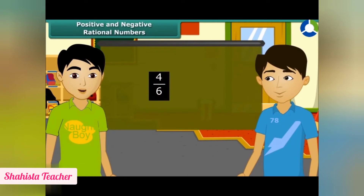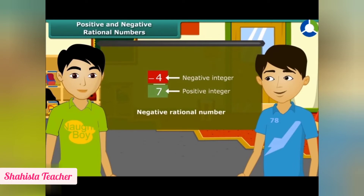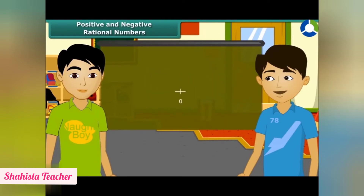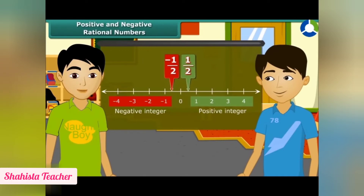A rational number with a positive numerator and positive denominator is called a positive rational number. When the numerator is a negative integer and the denominator is a positive integer — for example -4/7 — it is a negative rational number. On a number line, 1/2 will lie between 0 and 1, and -1/2 will lie between 0 and -1.